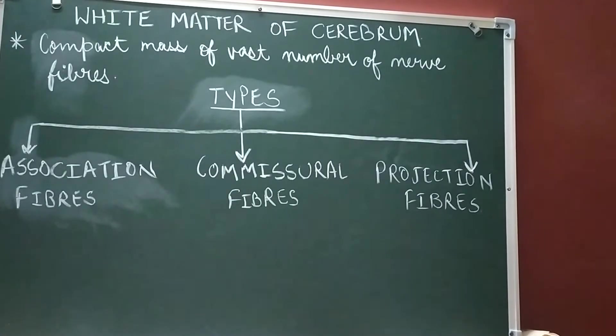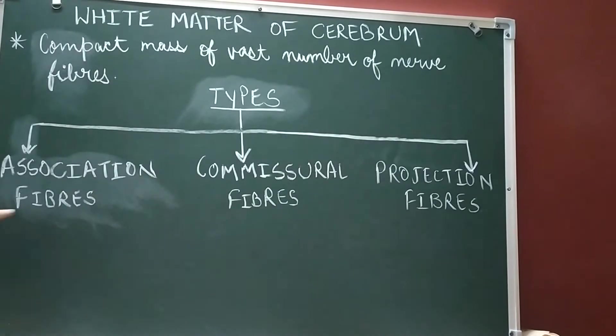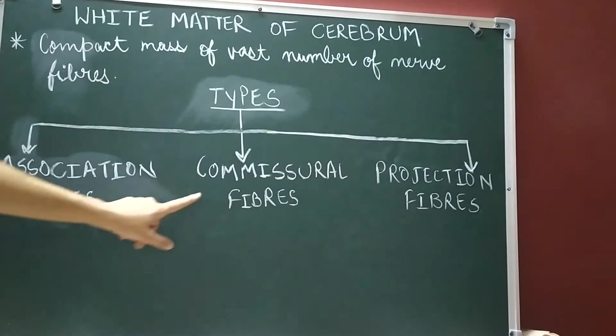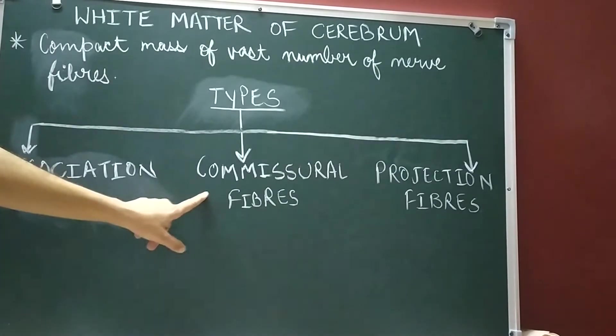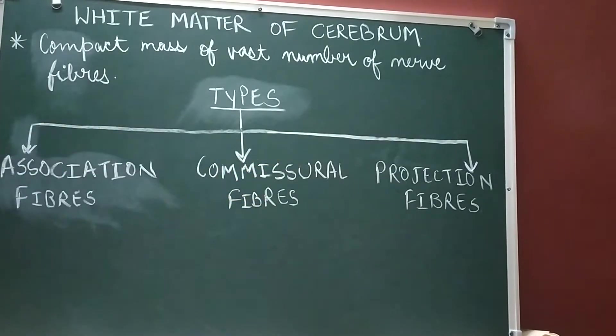There are a total of three types of fibers: number one, association fibers; number two, commissural fibers; and the third, projection fibers.